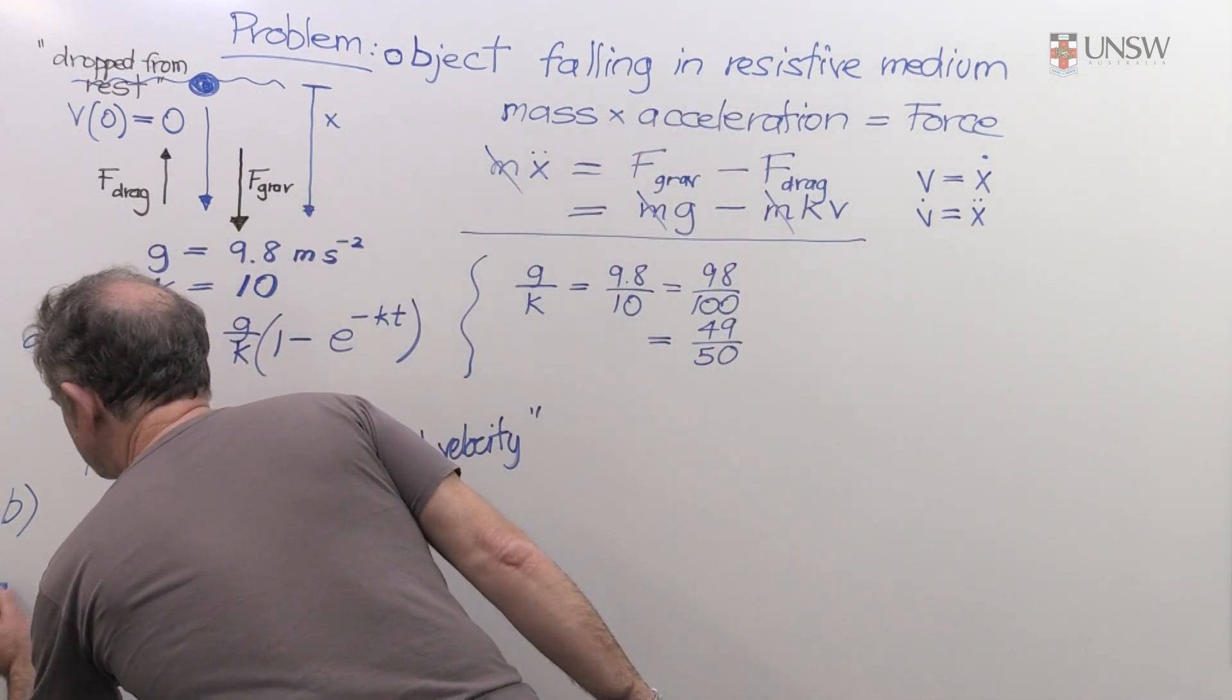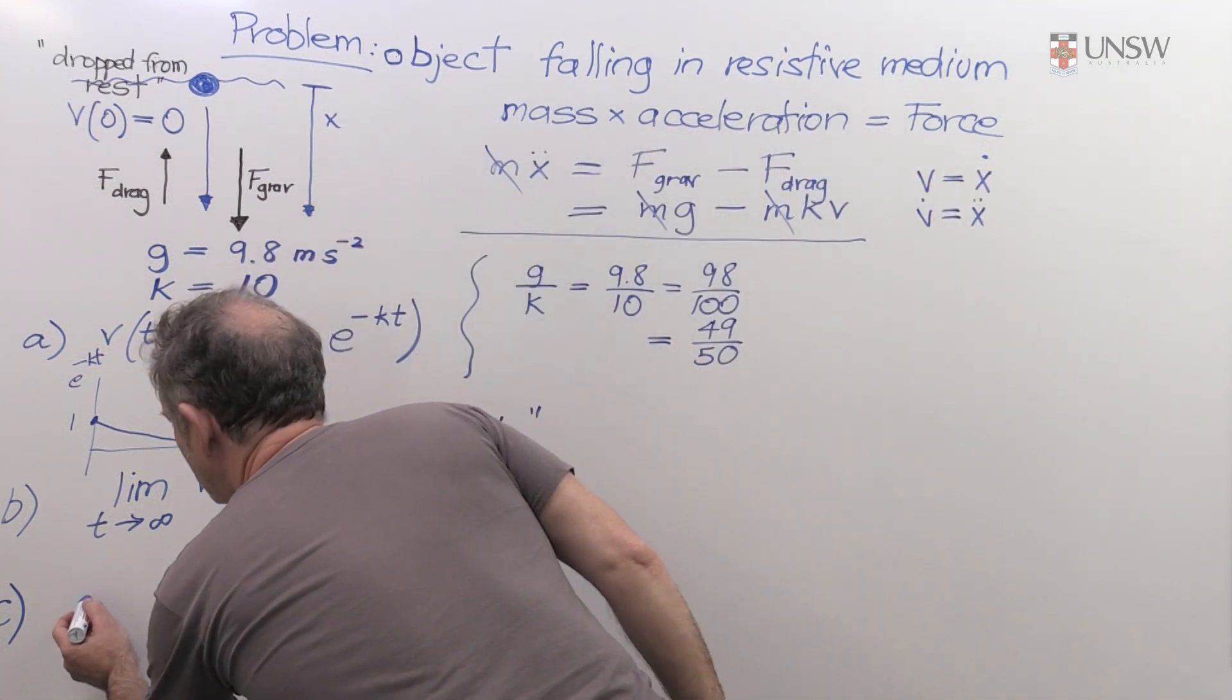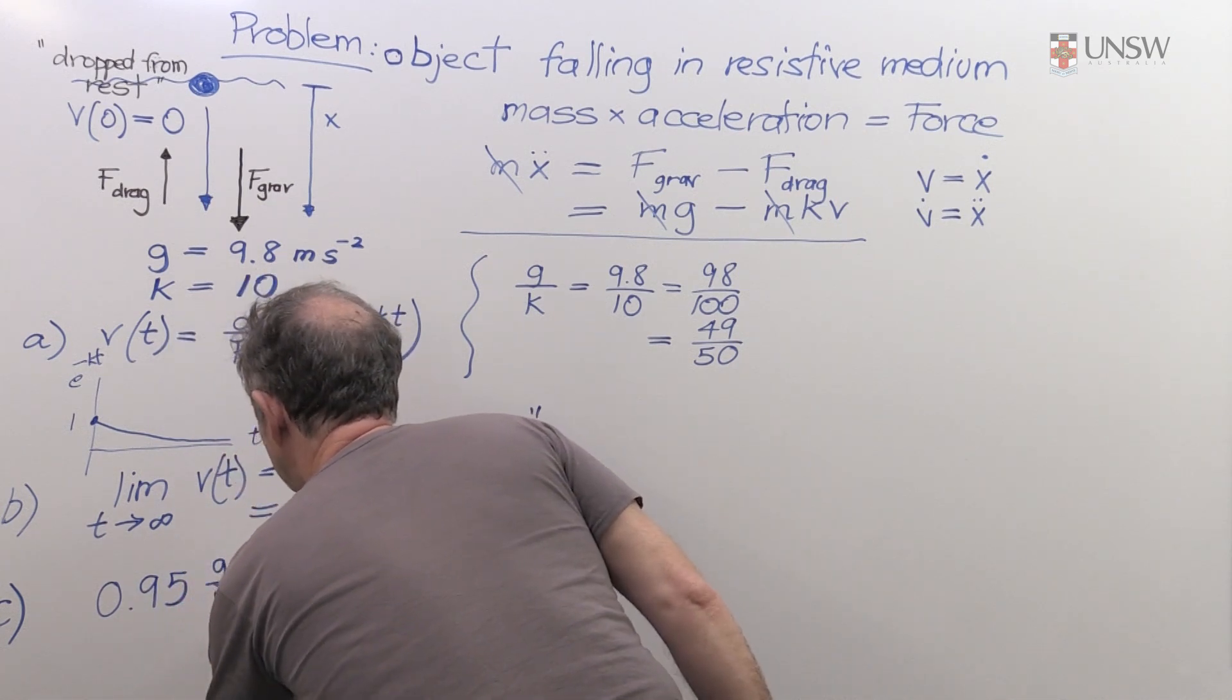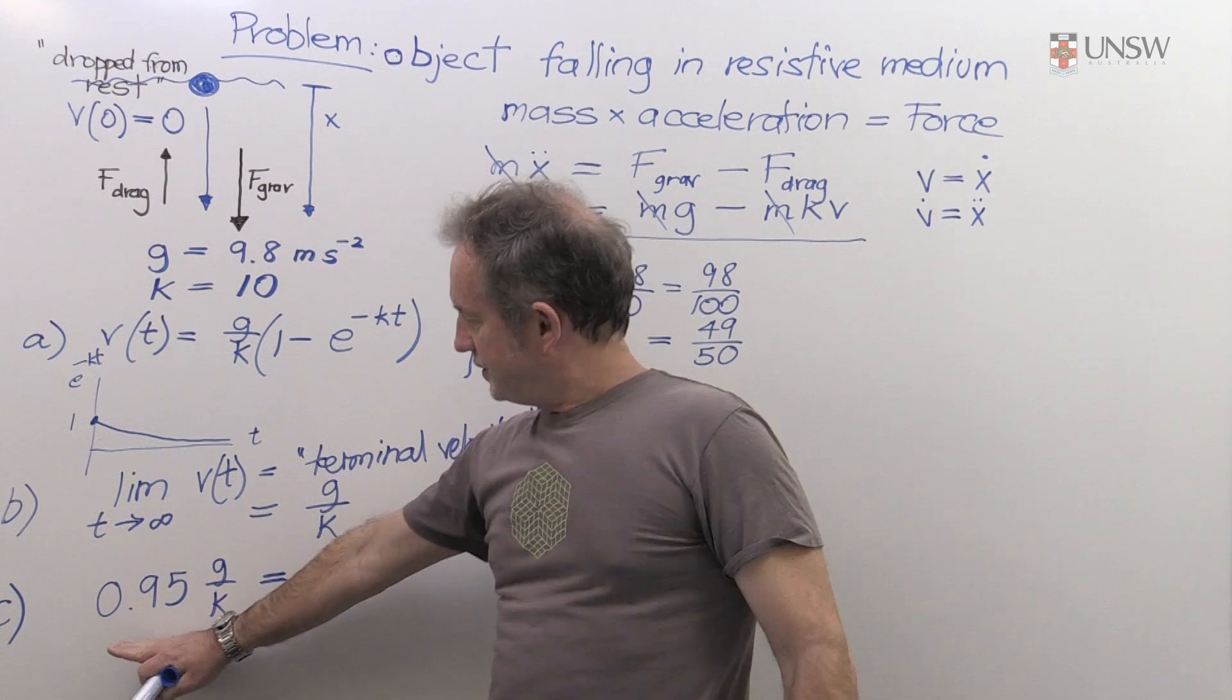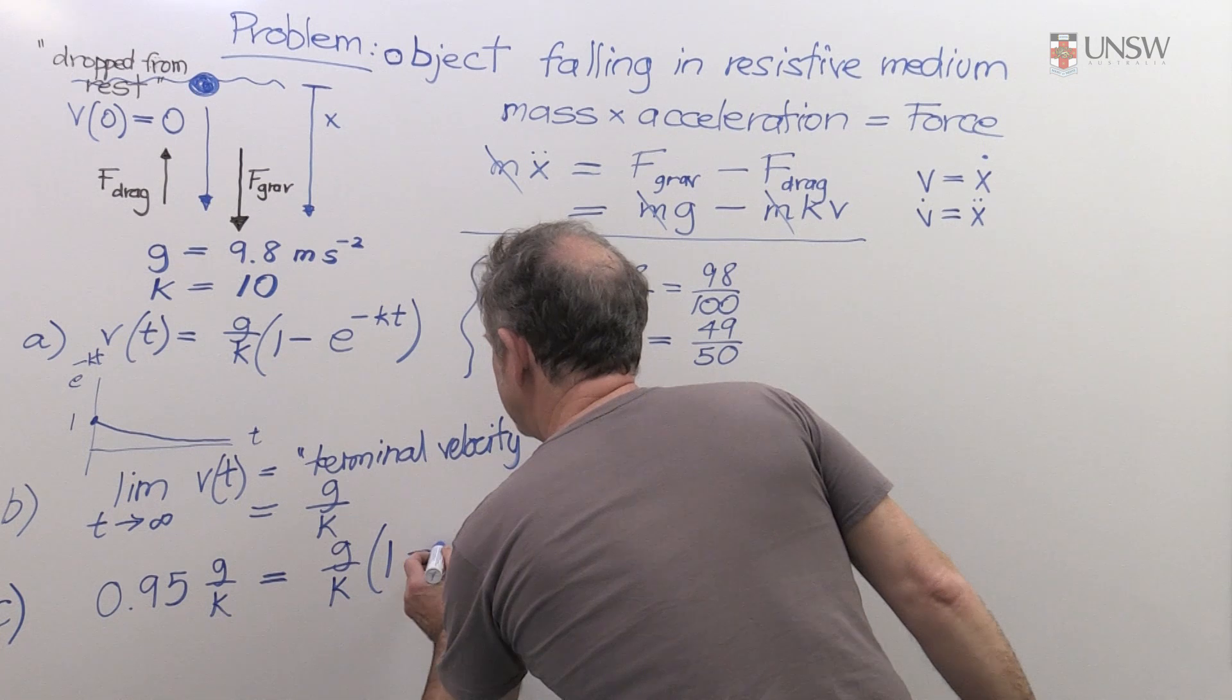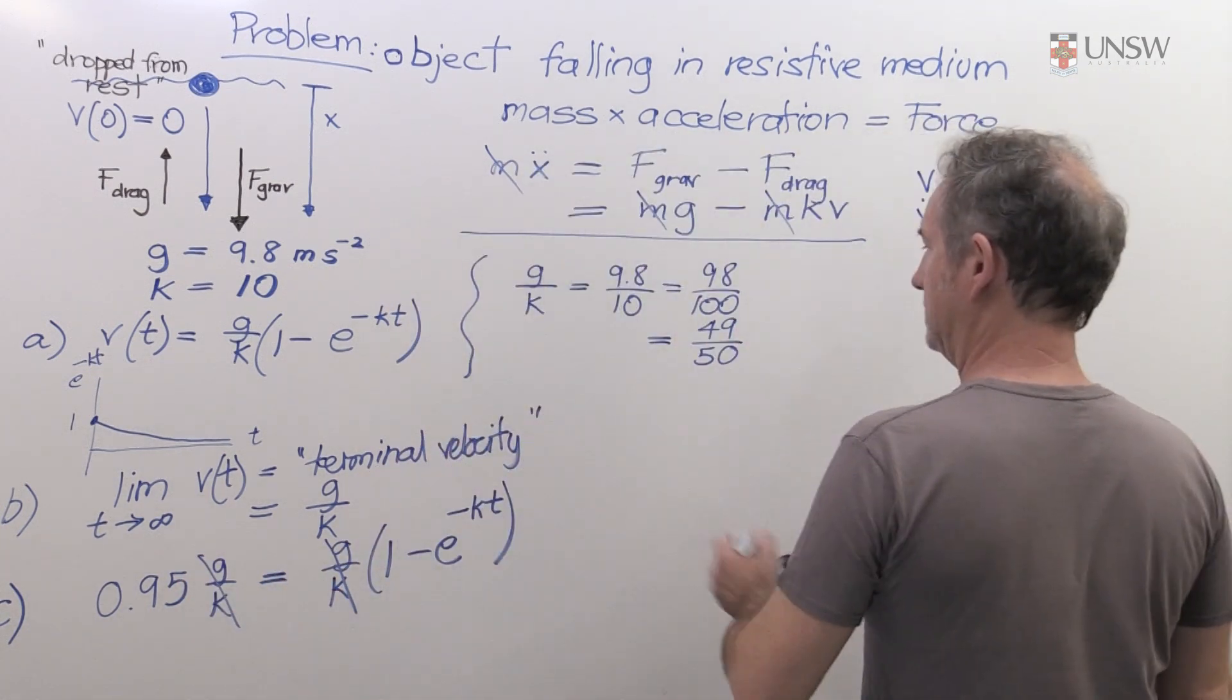So let's look at part c. Everything is flowing now from the knowledge of this solution. Part c is saying, how long is it going to take before my velocity is 95% of my terminal velocity? So in other words, I'm telling you this is the velocity that I want to achieve and I want you to figure out the time at which I achieve this. So, as I said, this is an exercise in just plugging into the solution.